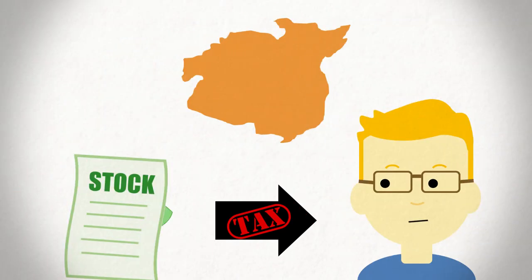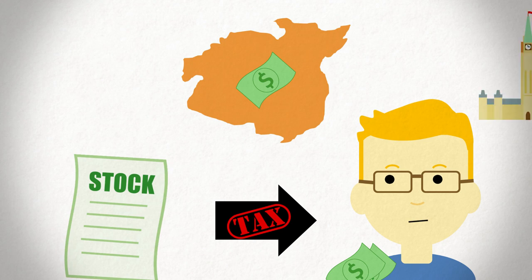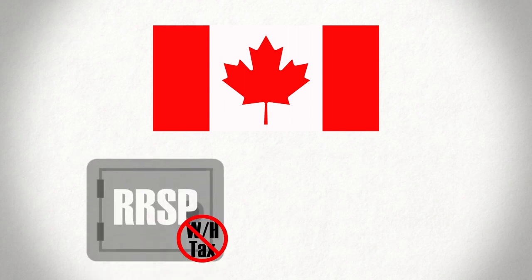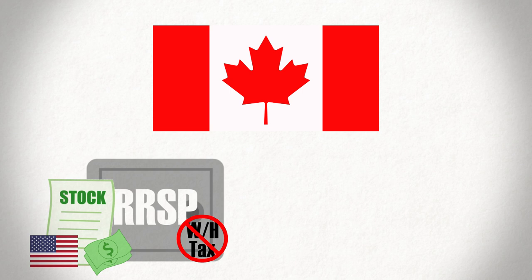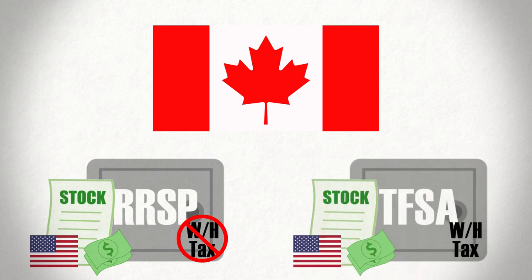Finally, there are the tax considerations. Tax rules obviously vary depending on where you live, where you're investing, and any treaties between the two. One thing to highlight when it comes to dividends is withholding taxes — some countries charge a tax on dividends paid out to foreign investors in addition to whatever tax you may pay at home. To some degree, this can be avoided through certain investment accounts like tax-exempt or tax-deferred accounts. In Canada, for example, the RRSP does not incur withholding taxes on US stock dividends, but the TFSA does, even though the account is supposed to be tax exempt.